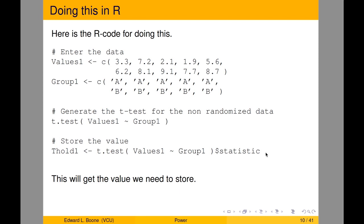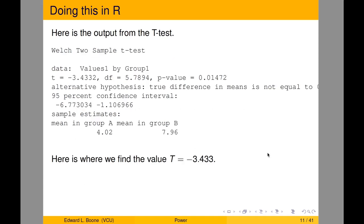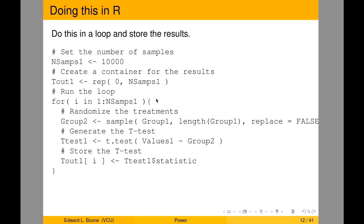When you run this, the output shows the value we had before: negative 3.4332. It also gives a p-value, but we don't care about this p-value or the alternative hypothesis here. We just need the t-statistic value. Now we can do this in a loop so we can store all results.